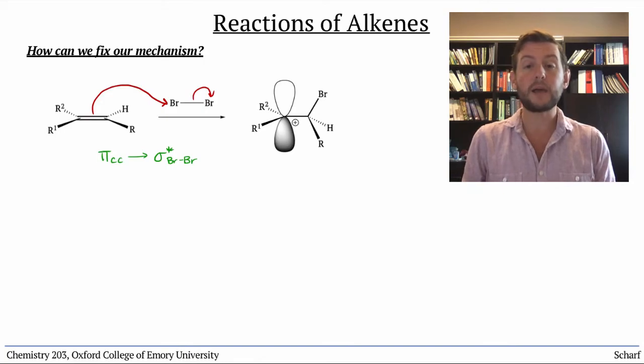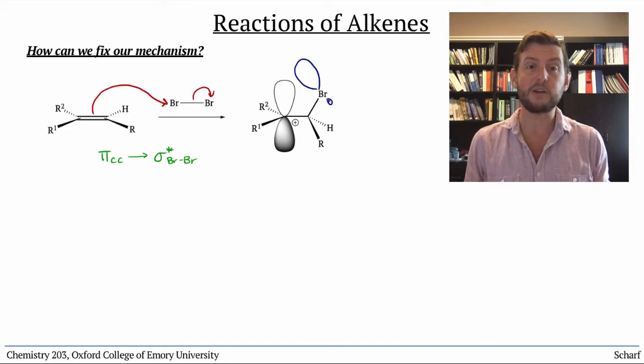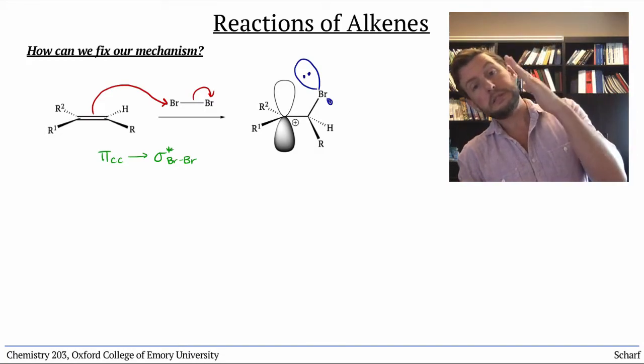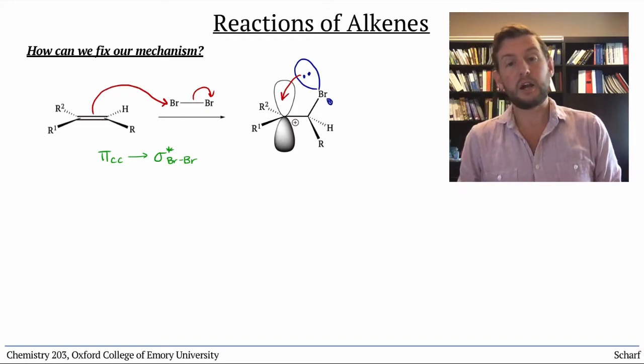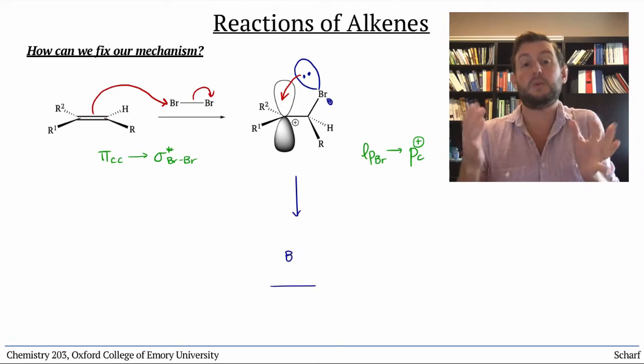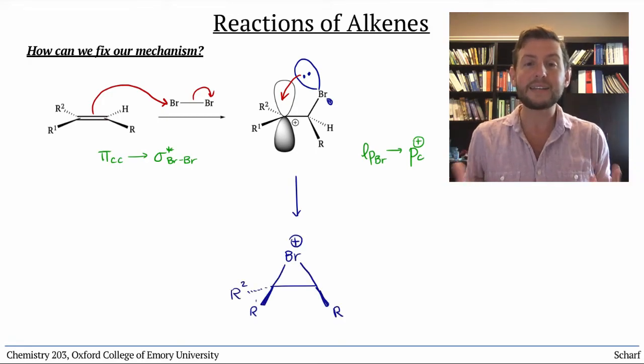We know that the carbocations are extremely hungry for electrons, and the bromine atom that's next door has some big lone pairs that are nearby. If the bromine just leans over a little, sharing one of its lone pairs and making a weird-looking three-membered ring, then we'd satisfy everybody's octets.